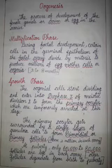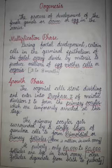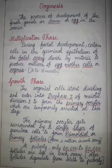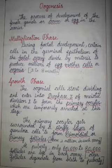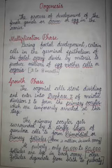Hi students, in this video we are going to learn about oogenesis — the process by which the primary sex organ, the ovaries, produce the female gamete. The ovum or the egg is produced through oogenesis. Oogenesis can be studied under three phases: multiplication phase, growth phase, and maturation phase.